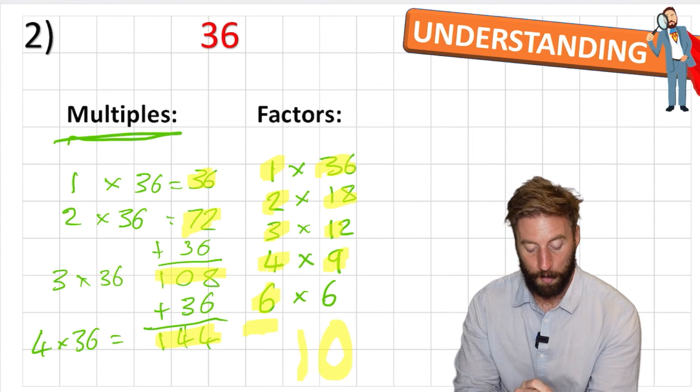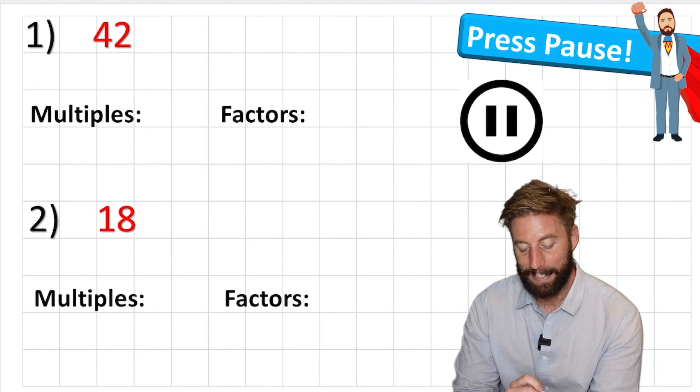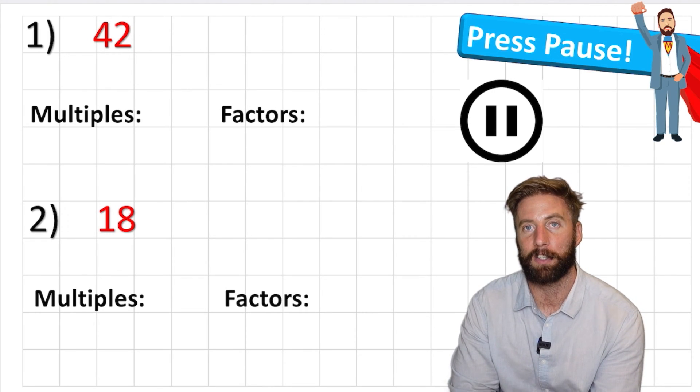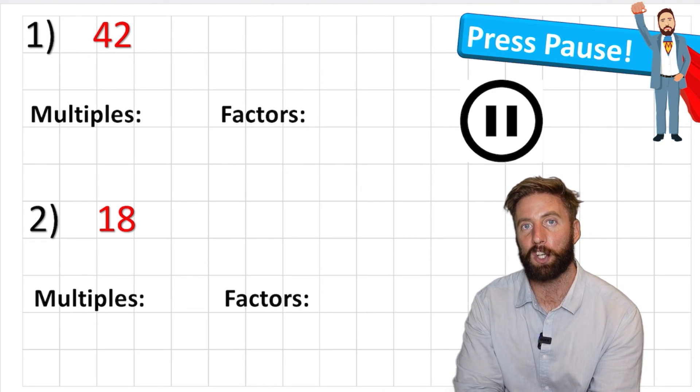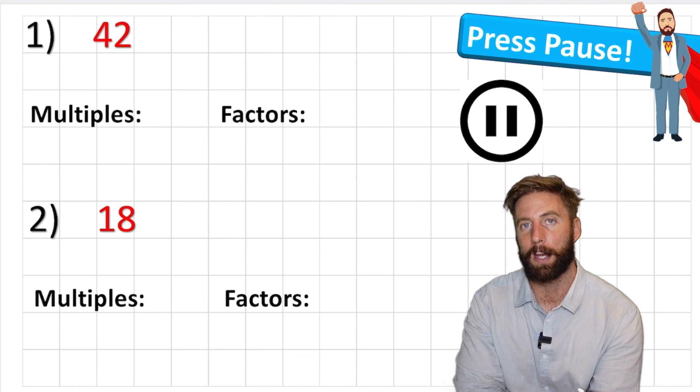Okay, hope this has been useful for you. I've now got a couple of questions for yourself to have a look at. I've got the number 42 and the number 18. I'd like you to give me five multiples for each of them and all of their factors. When you do that, put it in the comments section and I'm going to try and mark every single one. So press pause now, guys. Have a go at doing that and I'll see you in a minute.